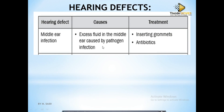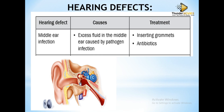Hearing defects — problems with hearing. Number one: middle ear infection. This is caused by excess fluid in the middle ear due to pathogens, basically bacteria. How do you treat this? You insert what is called a grommet. Grommets are very important. You do a small surgery — you cut where the pus is coming from, the pus comes out, and then antibiotics are applied because you are dealing with bacteria.